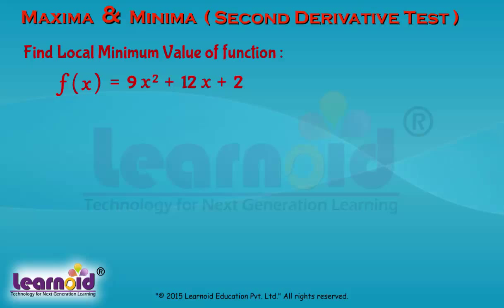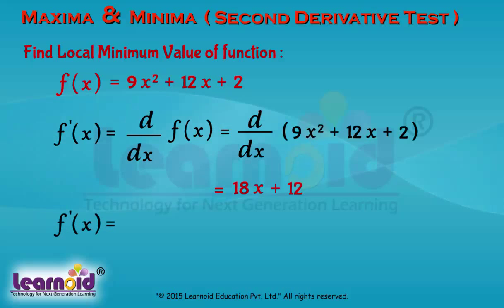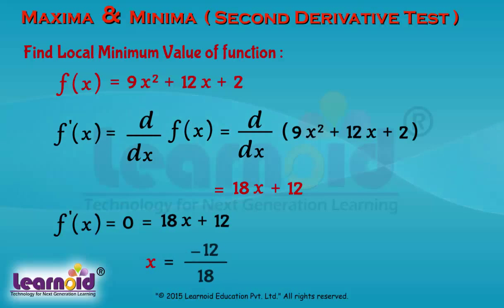Taking the first derivative of f, we get f'(x) = 18x + 12. Equating it to 0, we get x = −2/3.